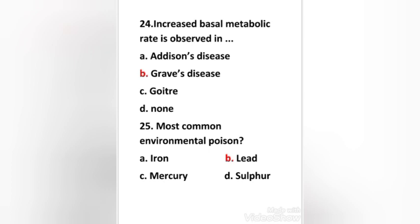Most common environmental poison: iron, lead, mercury, sulfur. Right answer is option B: lead.